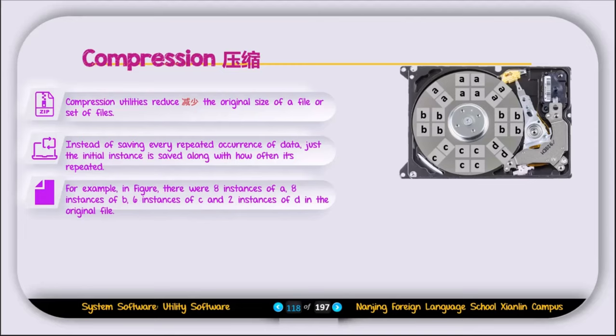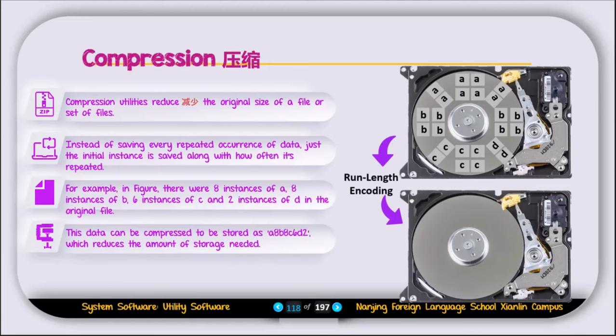For example, in the figure, there were eight instances of A, eight instances of B, six instances of C, and two instances of D in the original file. How can we compress this file to save some storage? We can use run-length encoding, which is one compression method. This data can be compressed and stored as A8, B8, C6, D2, which reduces the amount of storage needed. That's how we can reduce the file size and save it.